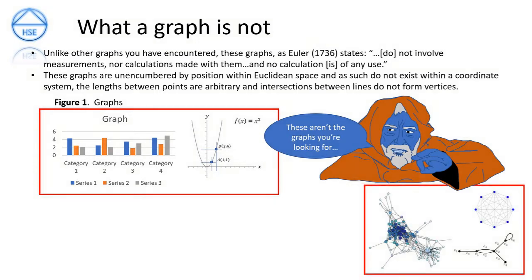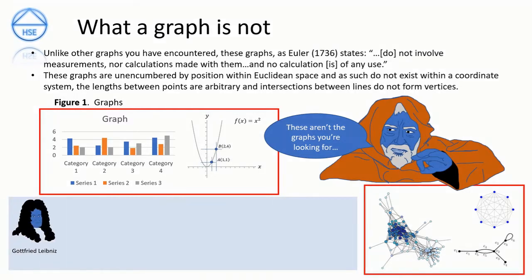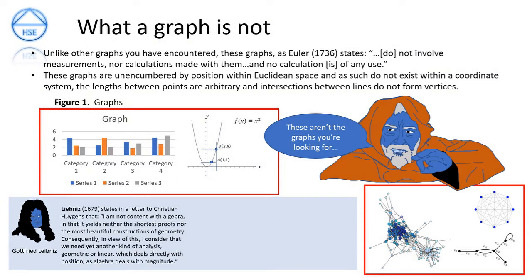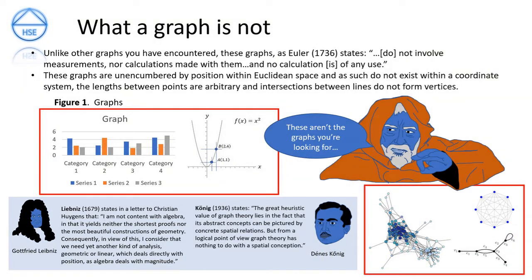Leibniz states in his letter to Christian Hugens in 1679: 'I'm not content with algebra and that it yields neither the shortest proofs nor the most beautiful constructions of geometry. Consequently I consider that we need yet another kind of analysis, geometric or linear, which deals directly with position, as algebra deals with magnitude.' Although Euler published the first work in graph theory, I consider Leibniz to be the Rosalind Franklin of graph theory and Euler to be more like Watson and Crick. Dennis Koenig states in his 1936 work that the heuristic value of graph theory lies in the fact that its abstract concepts can be pictured by concrete spatial relations, but from a logical point of view graph theory has nothing to do with spatial conception. These quotes touch on graph theory as the geometry of position — although viewed as spatial relations when pictured, it has nothing to do with position within Euclidean space.